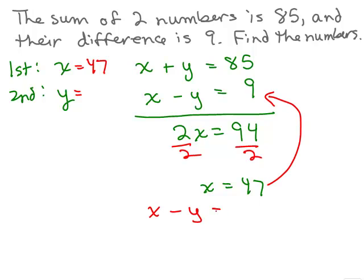So how about I plug it in to the second equation, x minus y equals 9, and I know that x is 47. So I'm going to put in 47 for x, 47 minus y equals 9, and then I'm going to add y to both sides so the y will be on the right-hand side, and I'm going to subtract 9 from both sides, so y is 38.